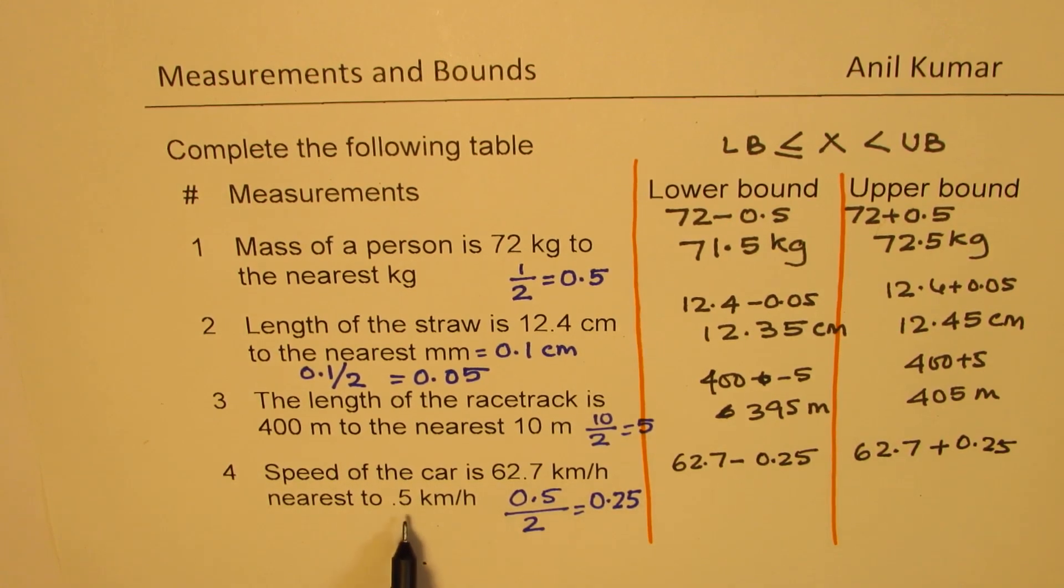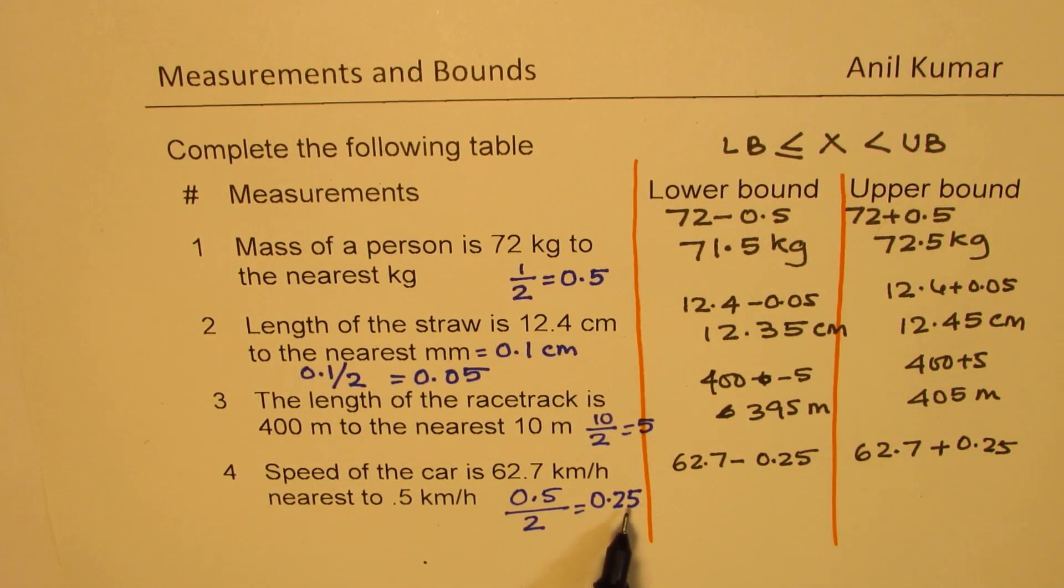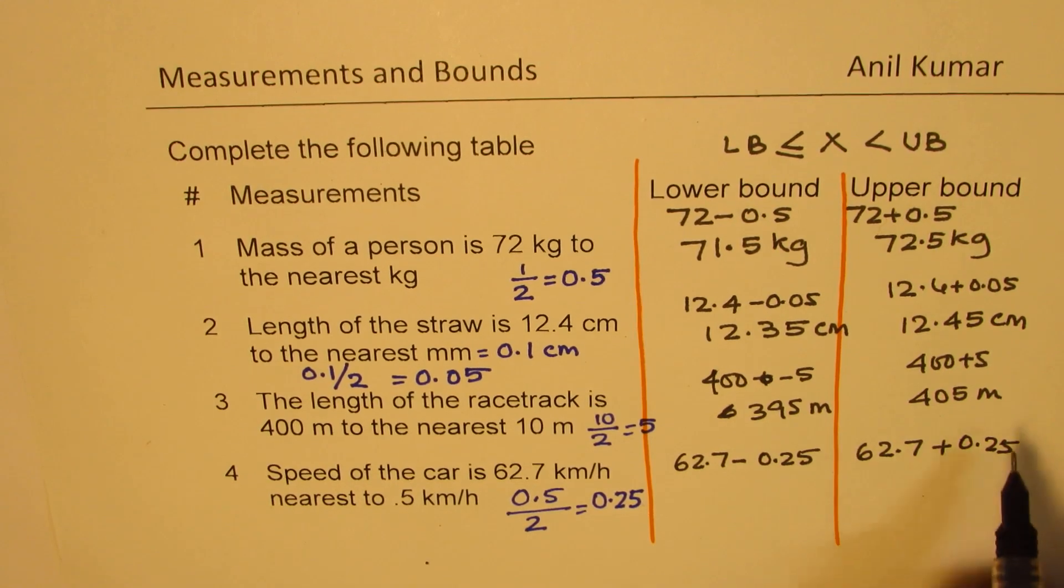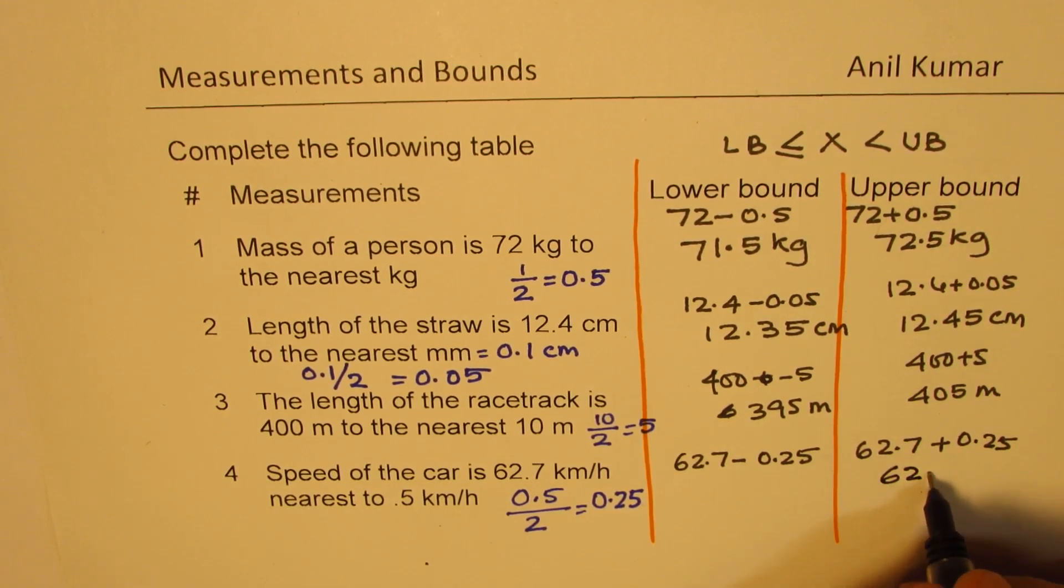So when we round to 0.5, we have to add and subtract half of 0.5, which is 0.25, perfect. So when you add 0.25, you get 62.95, right?